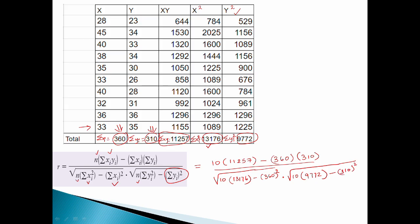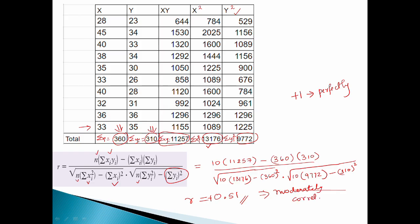If you substitute and simplify in your calculator, the final value is 0.51. So the correlation is positive 0.51. What is positive 0.51? It is not perfectly correlated, not highly correlated — 0.5 is moderately correlated. So the result is moderately correlated, and it is very easy to calculate Pearson's coefficient.